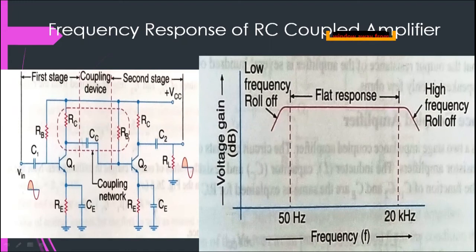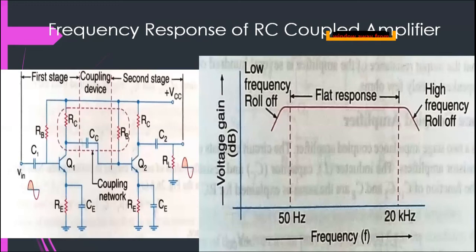Let's analyze this further. At the low frequency range, the capacitive reactance is inversely proportional to frequency — capacitive reactance is given by the formula 1/(Cω). So as the frequency increases, the capacitive reactance decreases. At low frequencies, the reactance of the coupling capacitor CC will be very high. Therefore, it will allow only a small portion of the signal to pass to the next stage. As a result, the total amplification decreases, and that's why we get lesser voltage gain at the low frequency range.